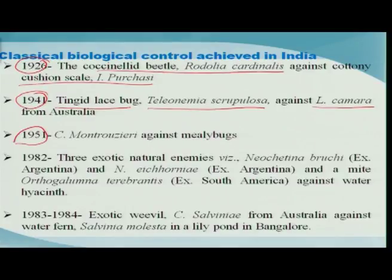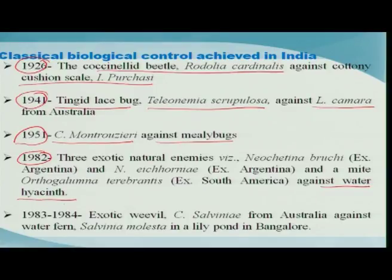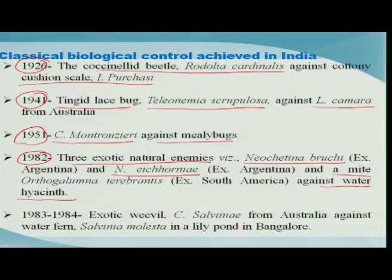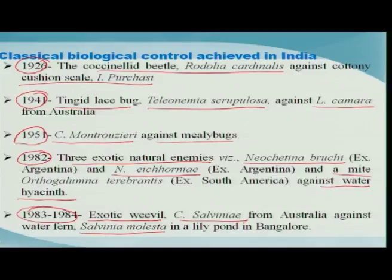In 1951, another lady beetle, Cryptolaemus montrouzieri, was introduced against mealybugs. In 1982, water hyacinth became a serious problem, and three exotic natural enemies were brought — two weevils, Neochetina bruchi and Neochetina eichhorniae, and a mite — which are keeping this weed under check. Similarly in 1983-84, another water weed, Salvinia molesta, was controlled by introducing an exotic weevil, Cyrtobagous salviniae, which is also doing a good job.